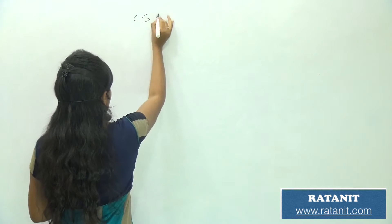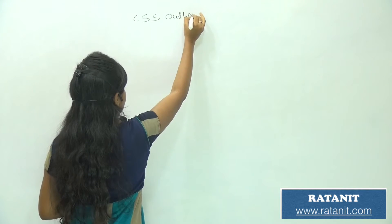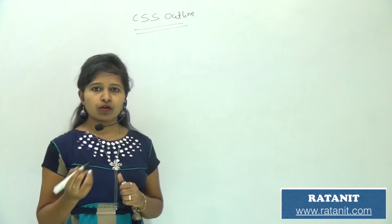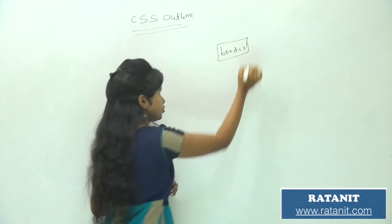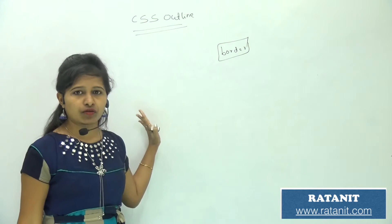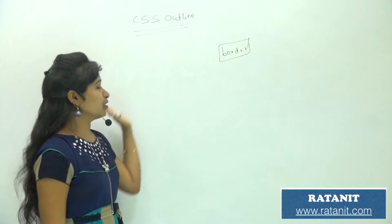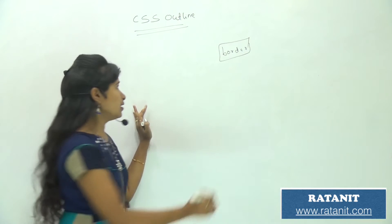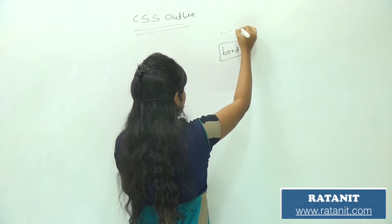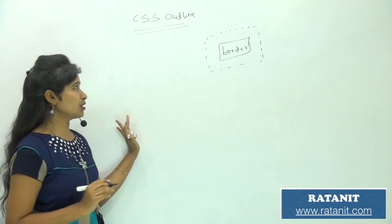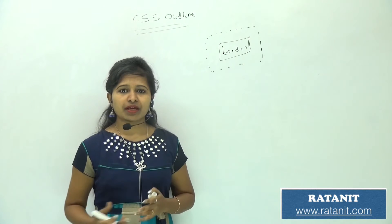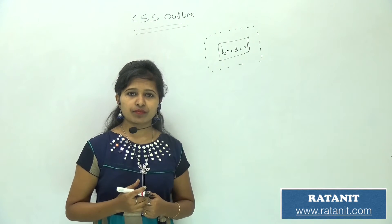Hello, welcome to Ratan IT. In this video session we are going to discuss CSS outline. We already discussed CSS border, and the same way we specify the border, we are going to specify the outline. The real usage of outline is that we use it around the border. This is not a critically important topic, but sometimes it can be very useful for highlighting or pointing to things.